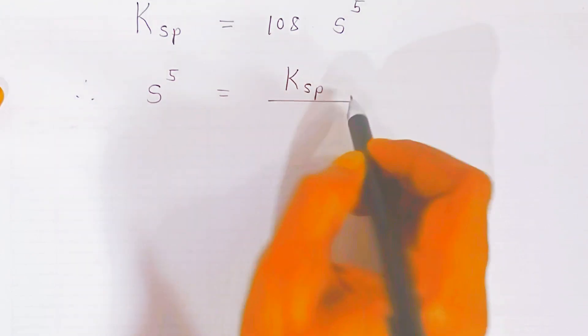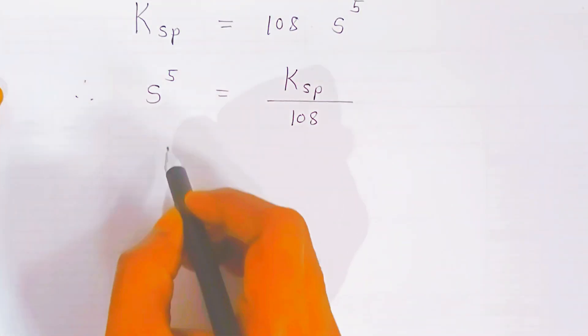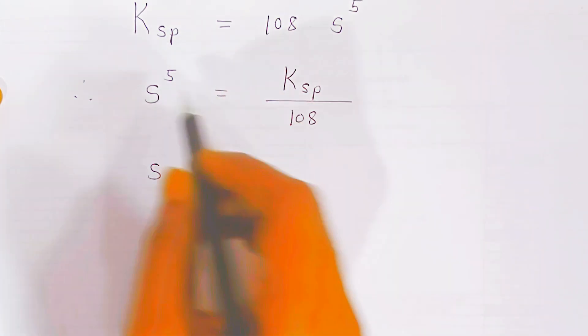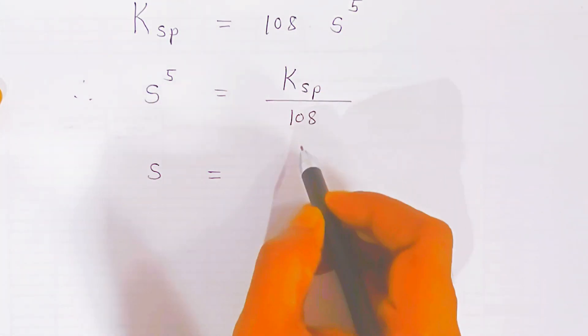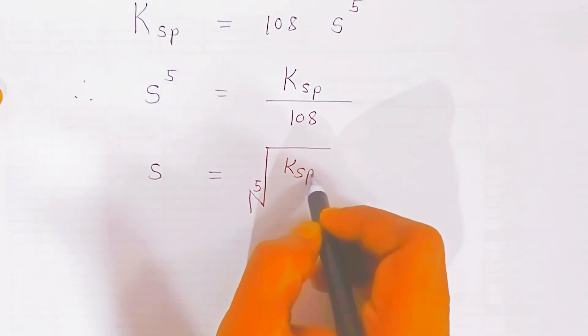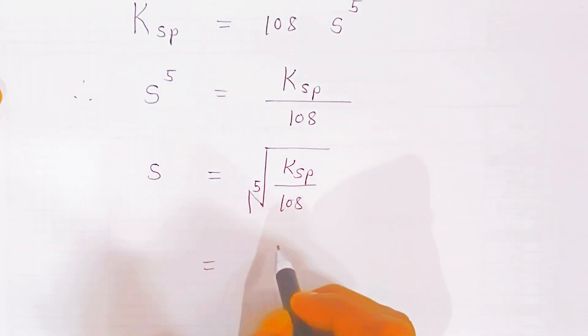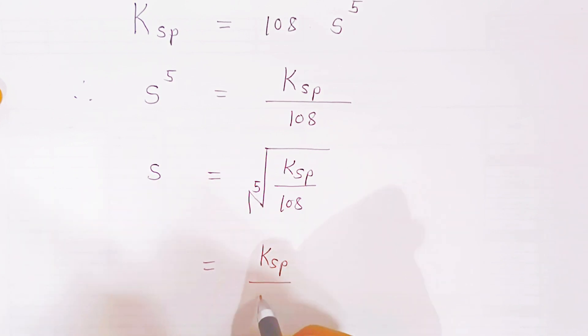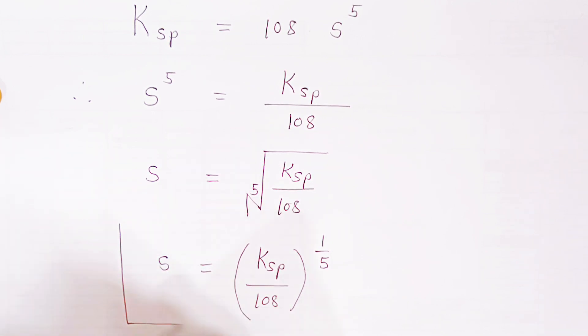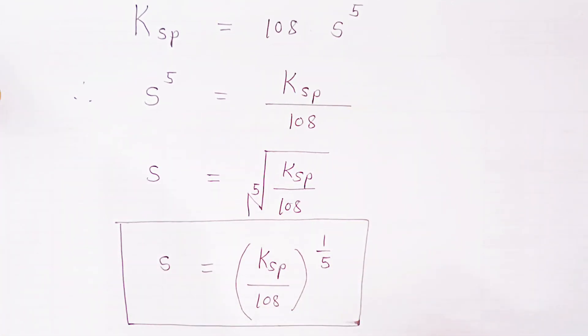So the solubility product equals 108 times S raised to 5. Therefore S⁵ = Ksp/108, and taking the fifth root, S = (Ksp/108)^(1/5). This is the relation between solubility and solubility product for calcium phosphate.